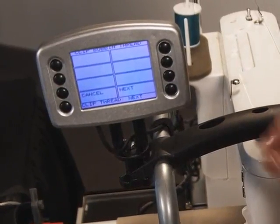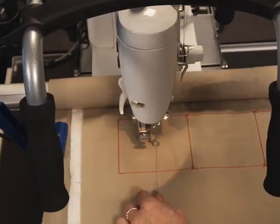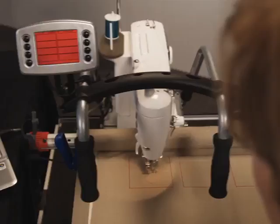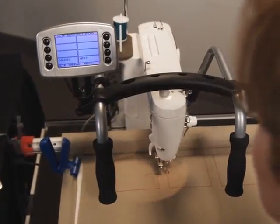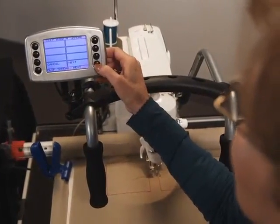Now push next. The machine will then move to the side allowing you to pull the bobbin and top thread together. Click next to bring the machine back to its starting position.